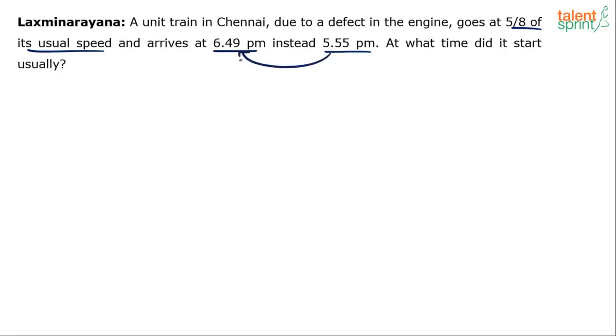First and foremost, we have to understand the difference in these two times: 5:55 PM to 6:49 PM. It usually arrives at 5:55 PM but today it was late because of that defect in the engine. How much is the difference? See, 5 minutes to 6 here and 49 minutes after 6 here, so totally 54 minutes. It was late by 54 minutes.